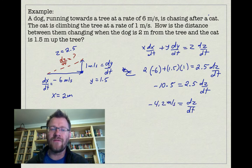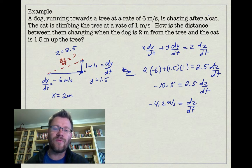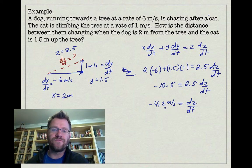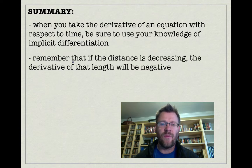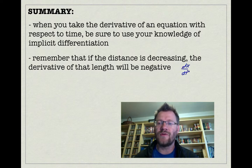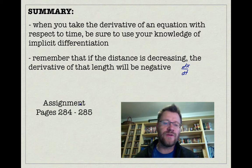The negative result means this distance is getting smaller, which makes sense since the dog is running at 6 m/s and the cat is only moving at 1 m/s. In summary, when taking the derivative of an equation with respect to time, you must use implicit differentiation. Remember that if a distance is decreasing, its derivative — such as dx/dt — will be negative. Your assignment is on pages 284 to 285. Good luck, and we'll see you in class.